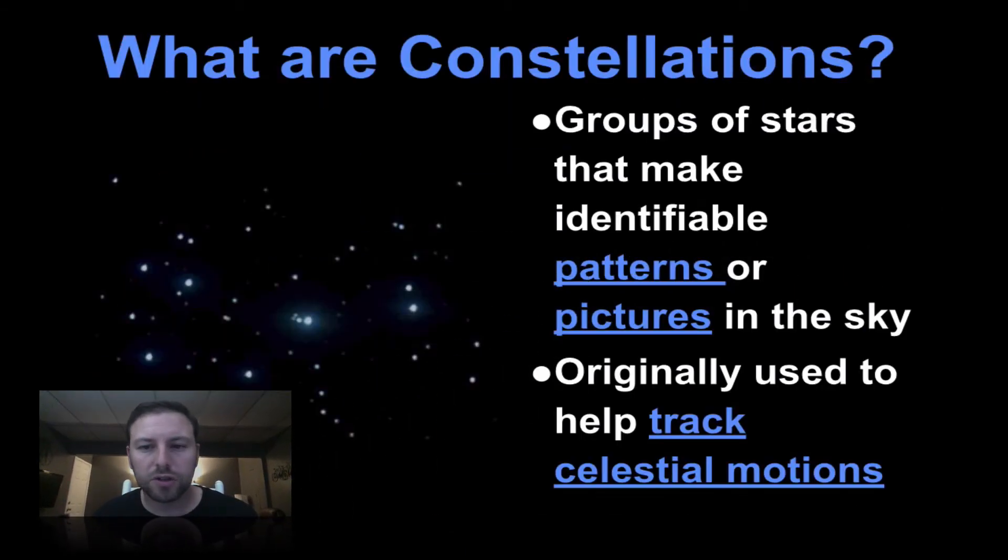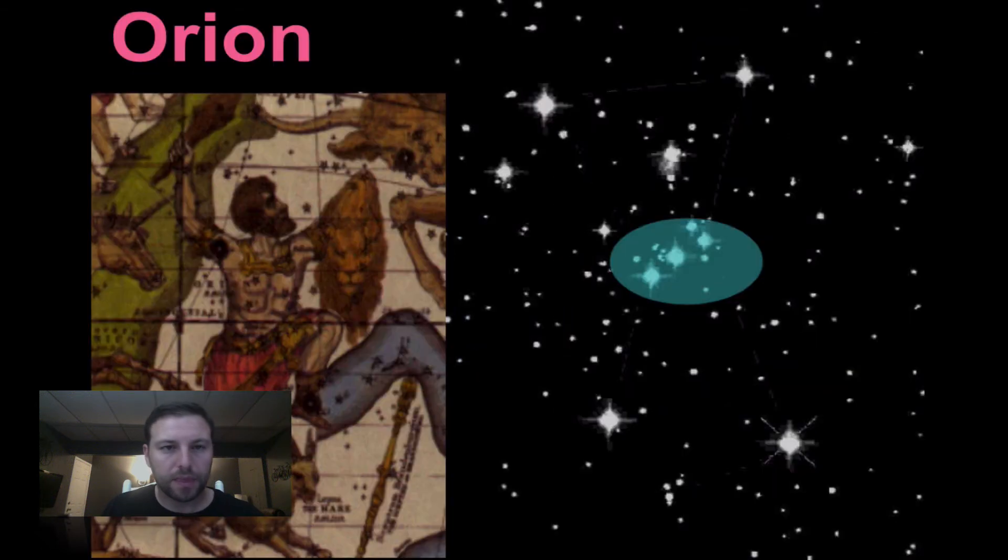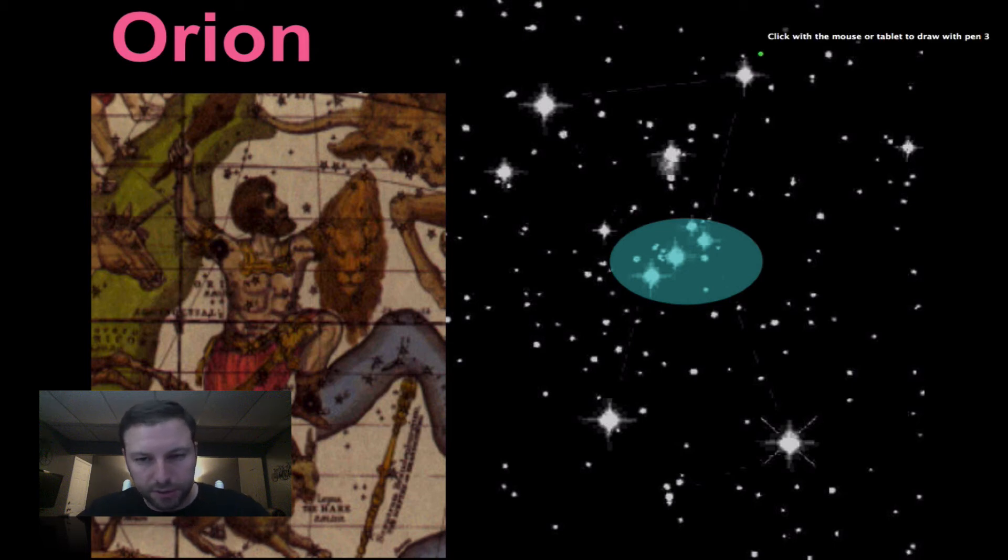So constellations are just groups of stars that make identical patterns of pictures in the sky. Basically used to help us track celestial motions. What's kind of going on in the nighttime sky. Here's Orion by its characteristic three stars forming that belt.